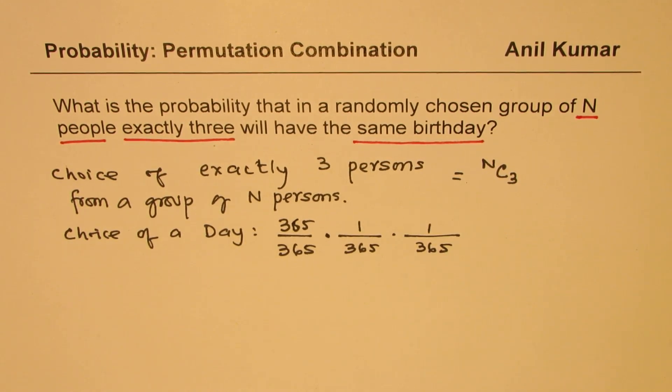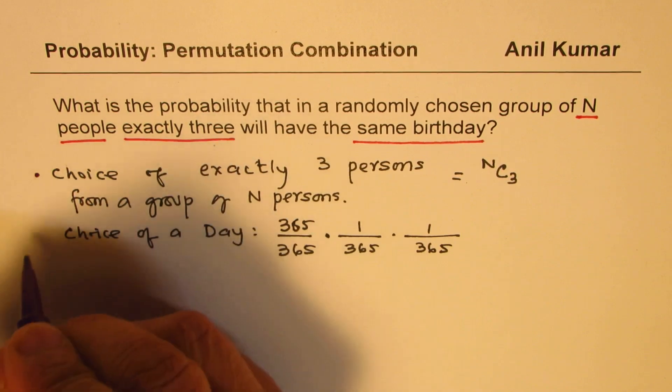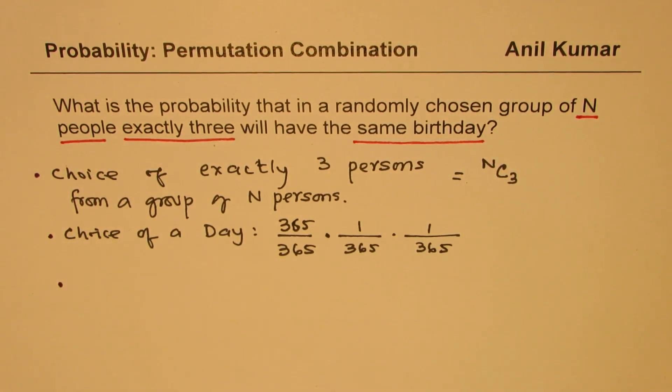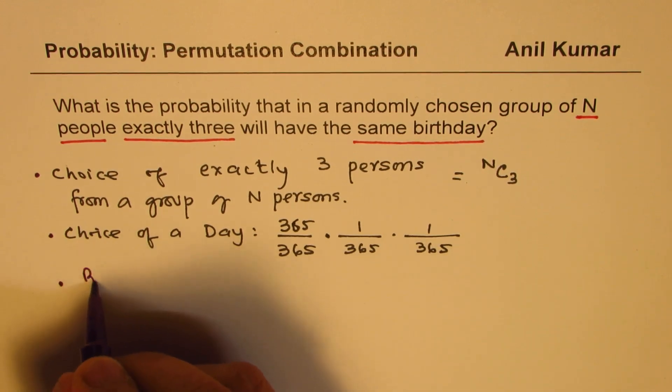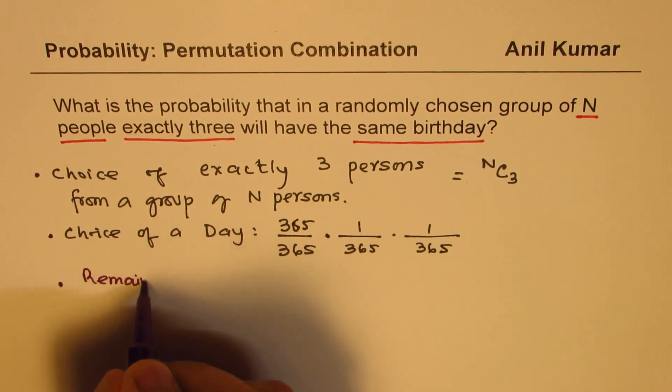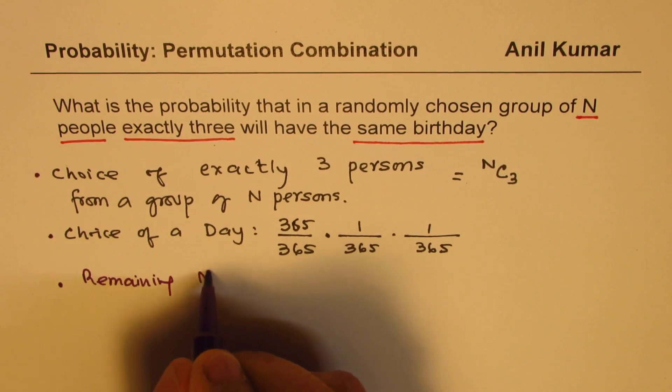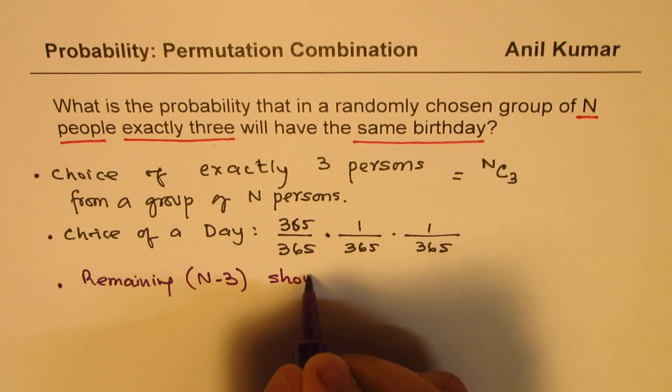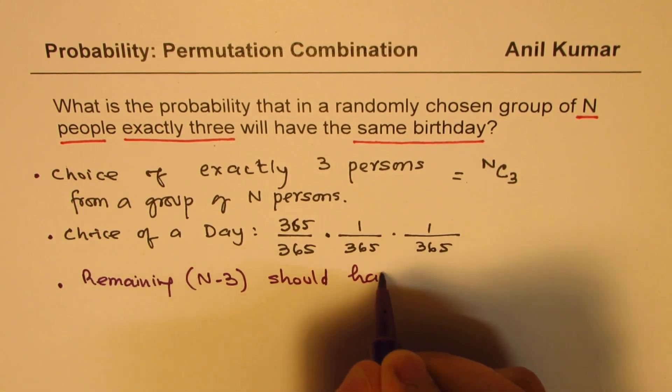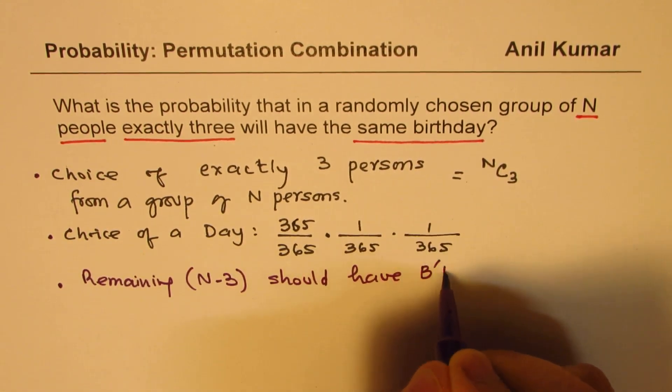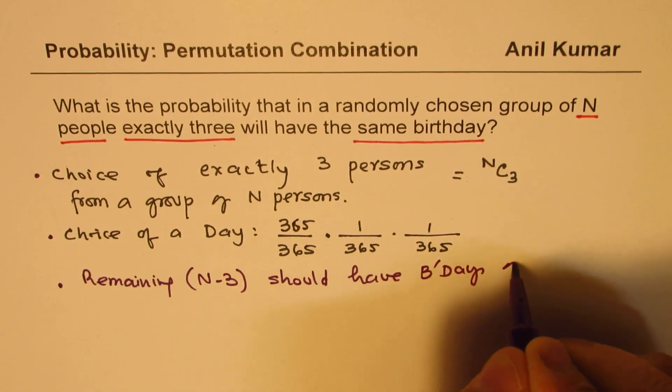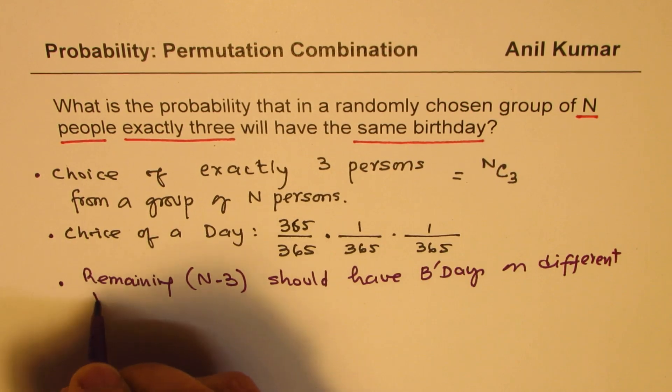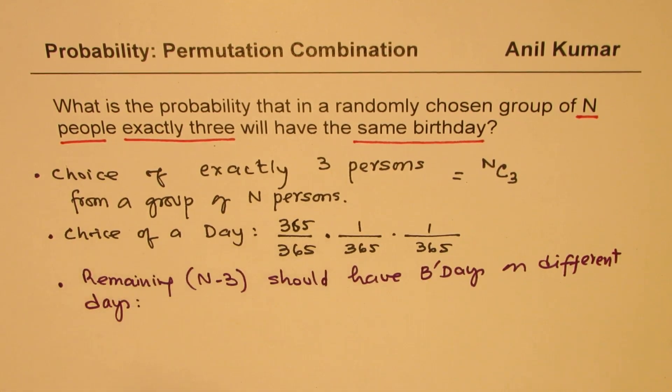And then, what else? For the rest of the people, so that is how you are going to approach. For the rest of the people, how many are remaining? Now, remaining are n minus 3.